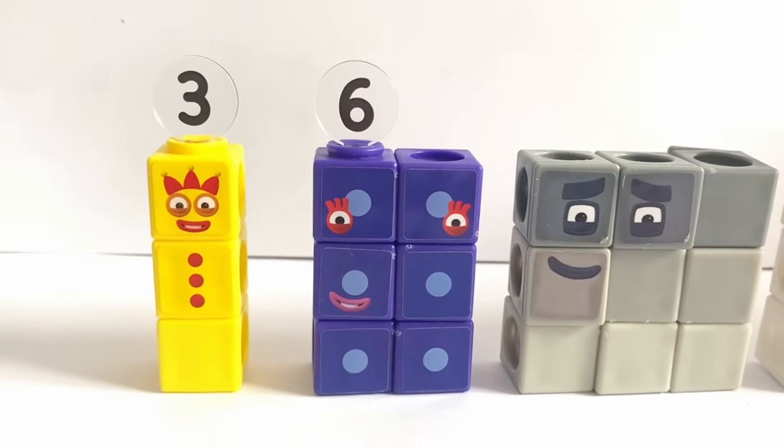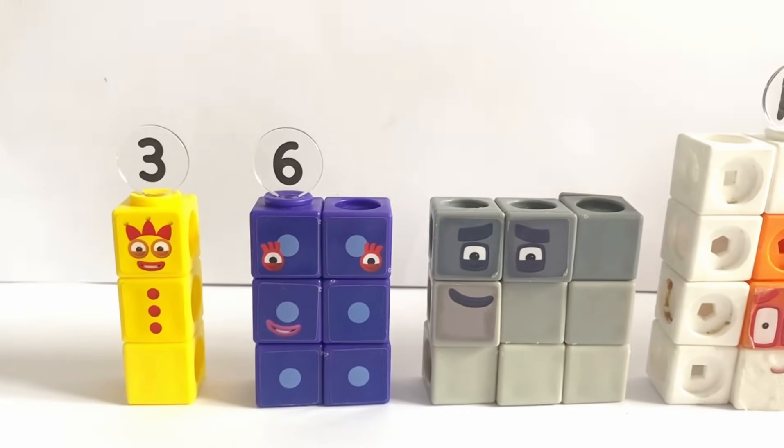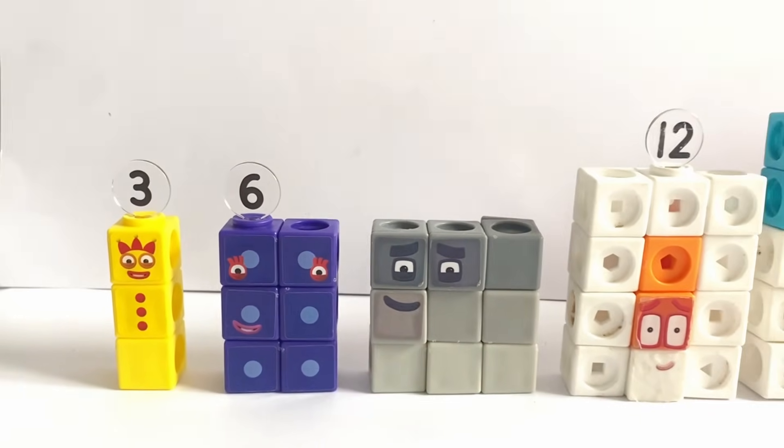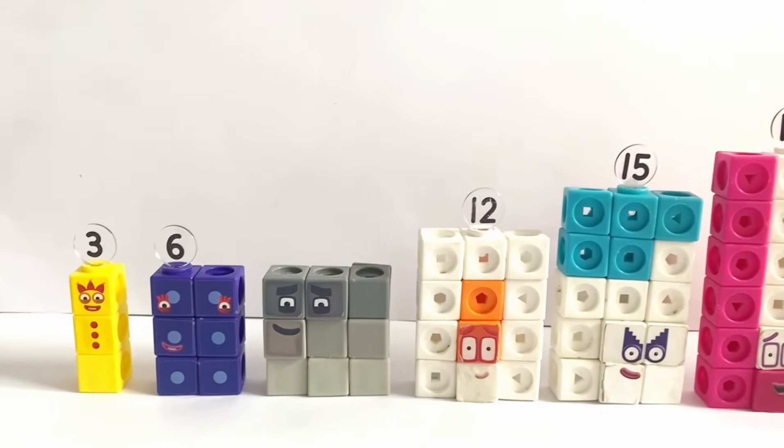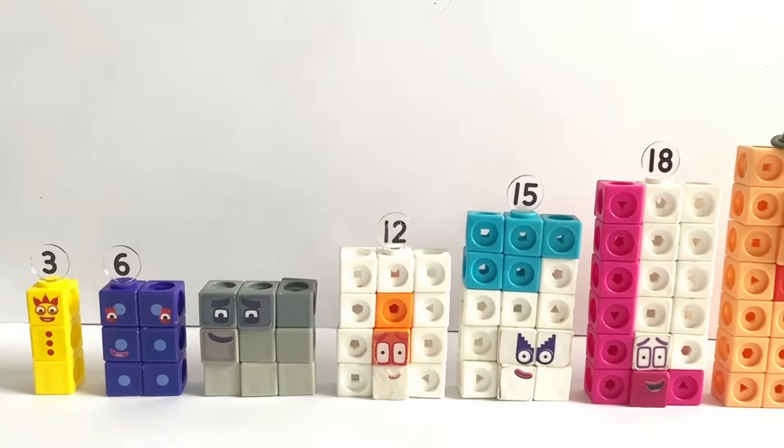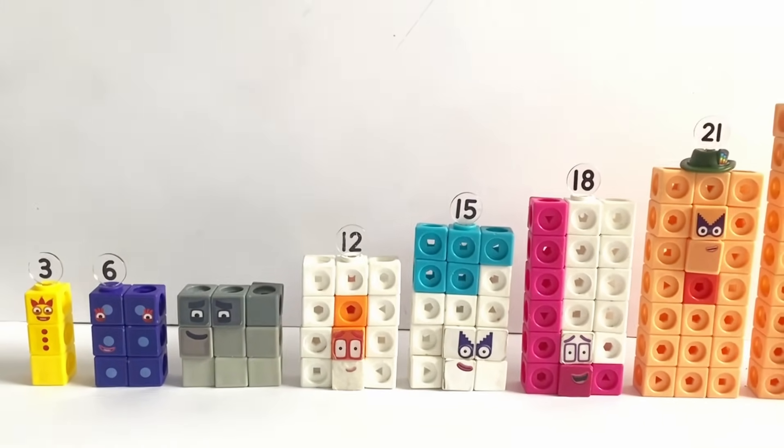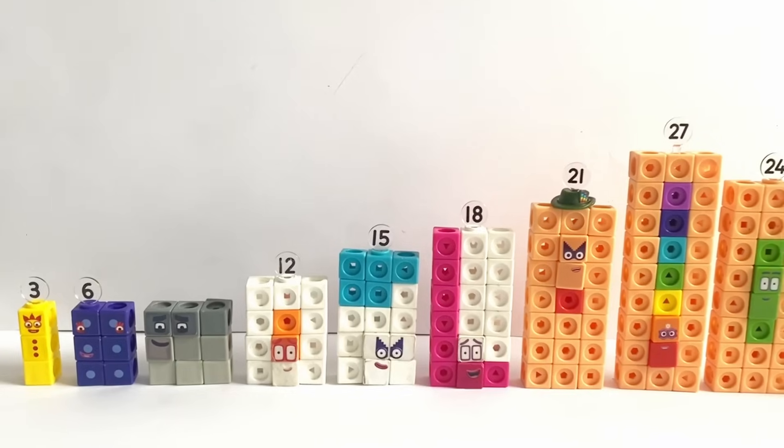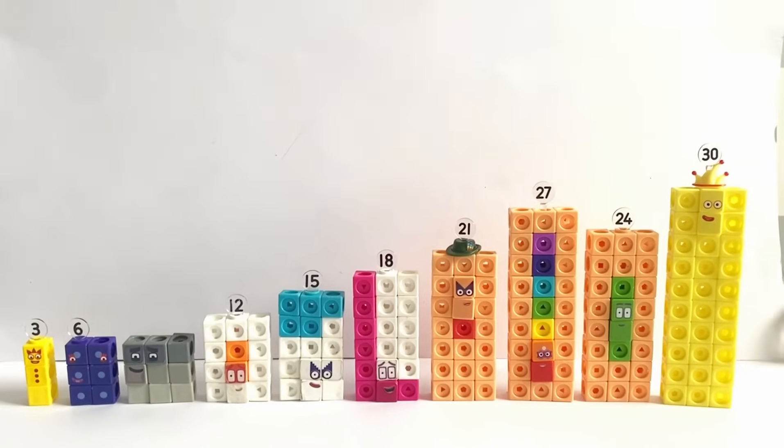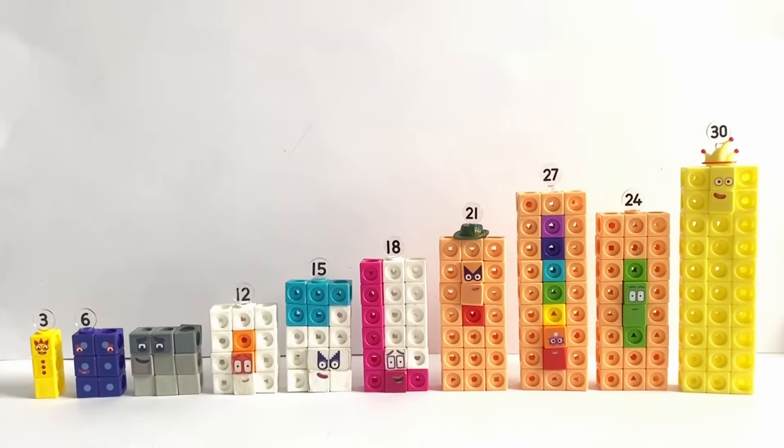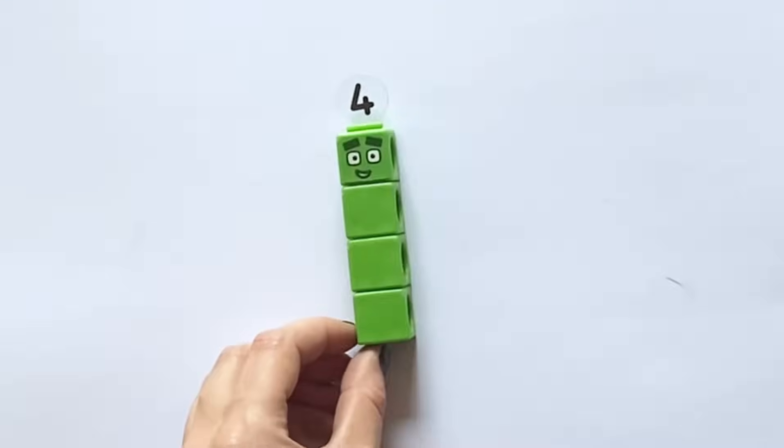And there we have our finished 3 times table up to 30. 3, 6, 9, 12, 15, 18, 21, 24, 27, and 30. So next is the 4 times table.